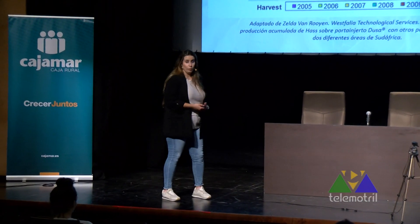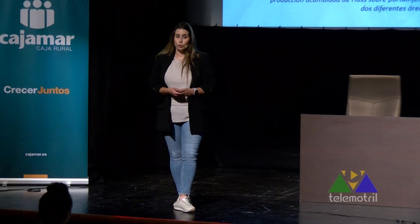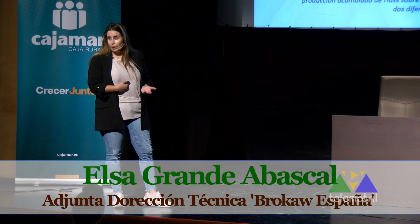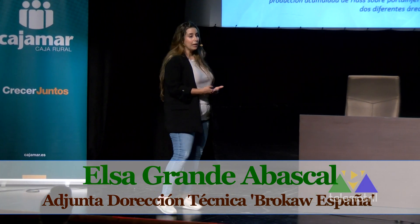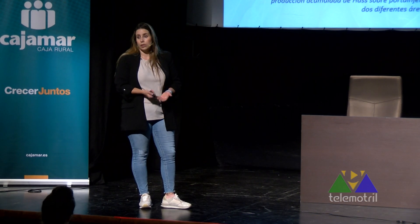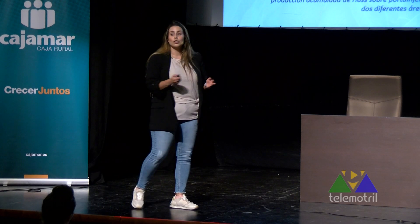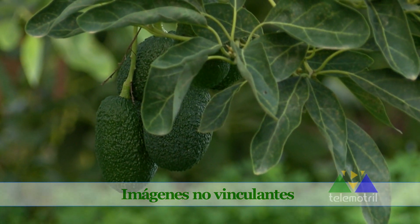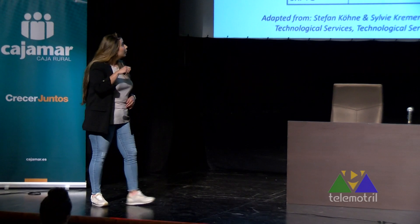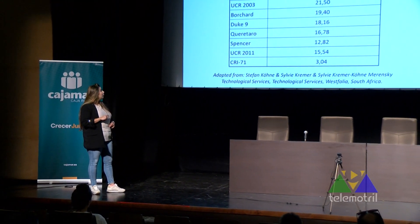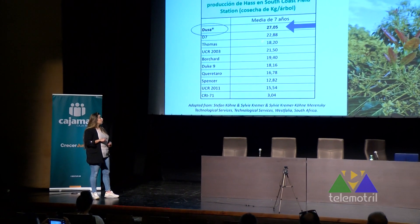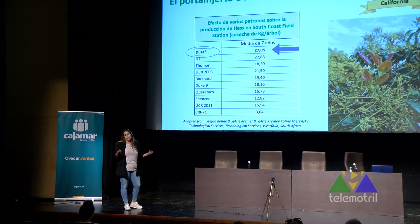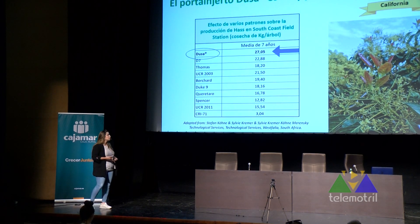Siempre trabajamos con analíticas de suelo, porque aunque el patrón clonal Dusa es muy productivo y muy tolerante a Phytophthora, quizás en un suelo más pesado no sea el mejor y quizás no produzca tanto como un Duque 7. Estamos hablando de las condiciones óptimas para cada patrón. Otro ejemplo, en este caso en California: comparando la media de producción por árbol de 7 años, el Duque 7 también es muy buen patrón, pero es verdad que el Dusa a día de hoy es el rey de los patrones clonales siempre que el suelo nos permita ponerlo.